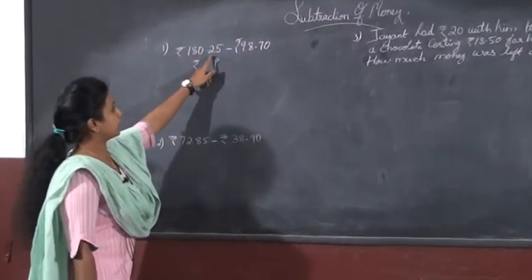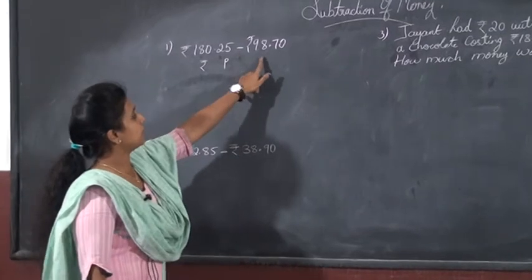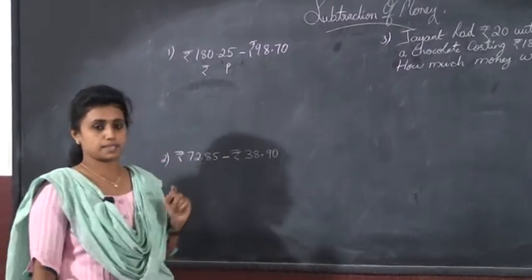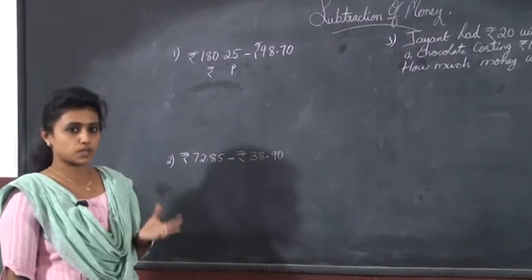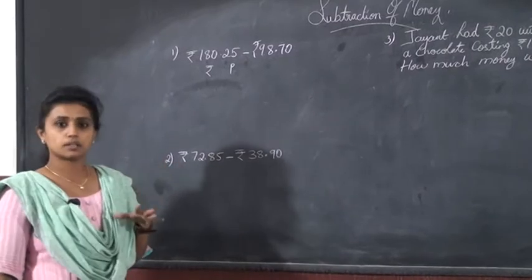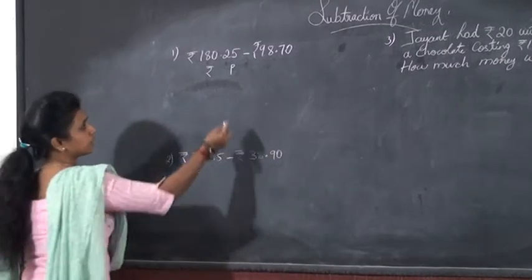That is, 180 rupees 25 paise minus 98 rupees 70 paise. So, what do you want to do? First write the numbers or the amounts in columns. First method, how about the addition?